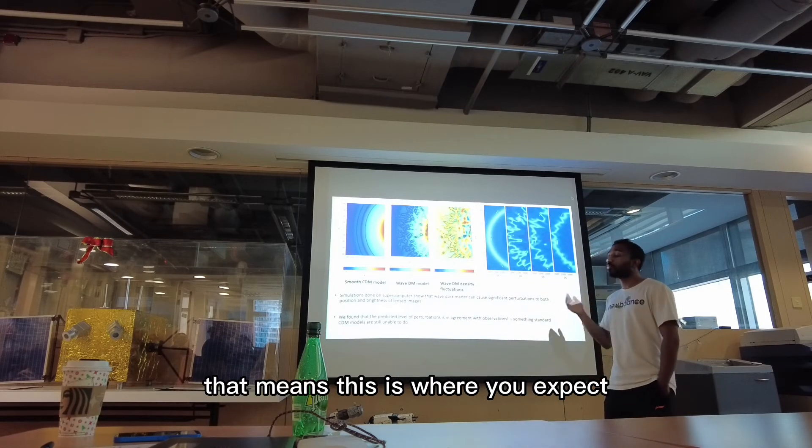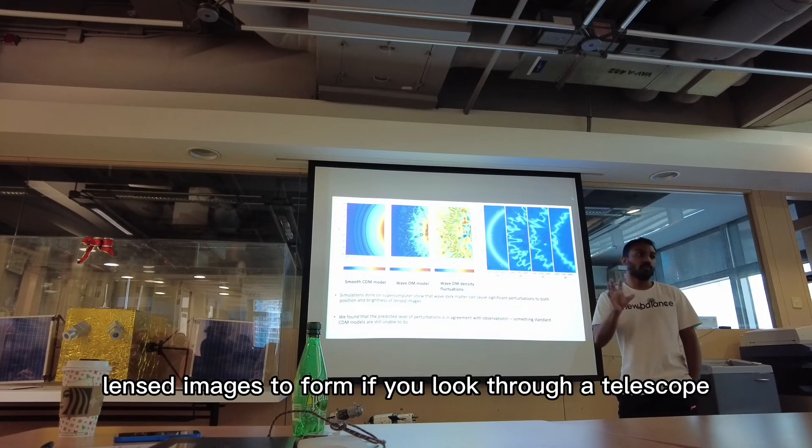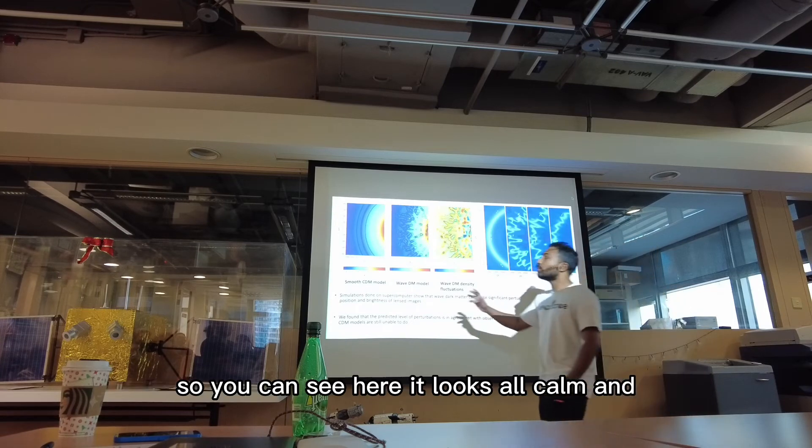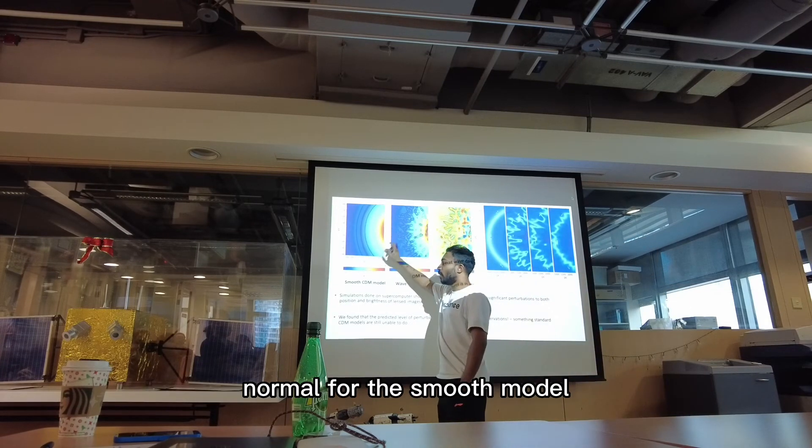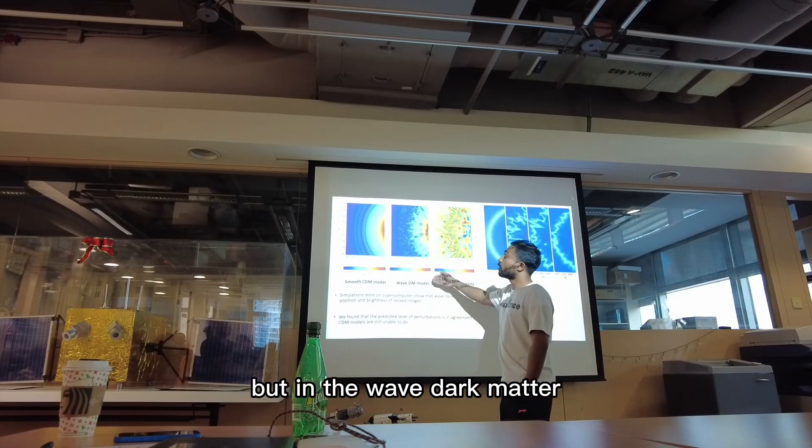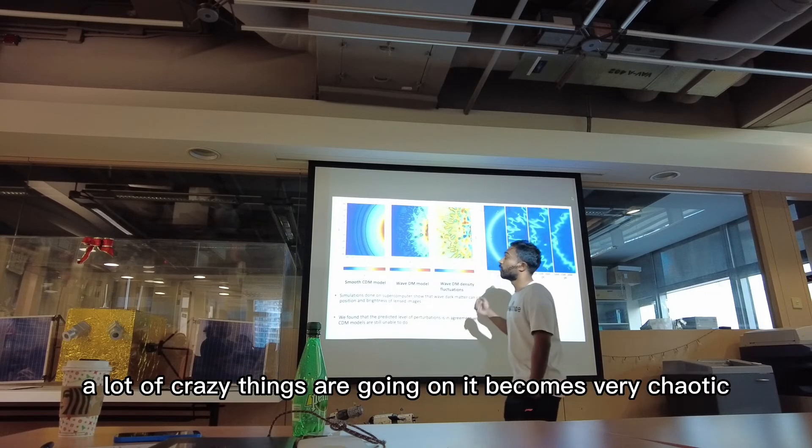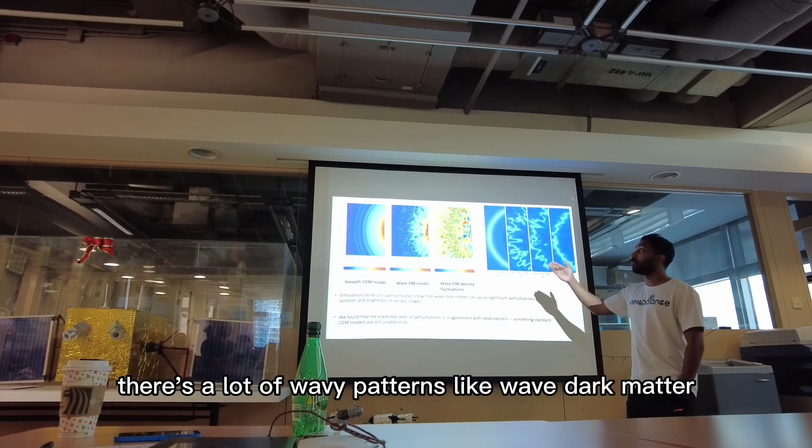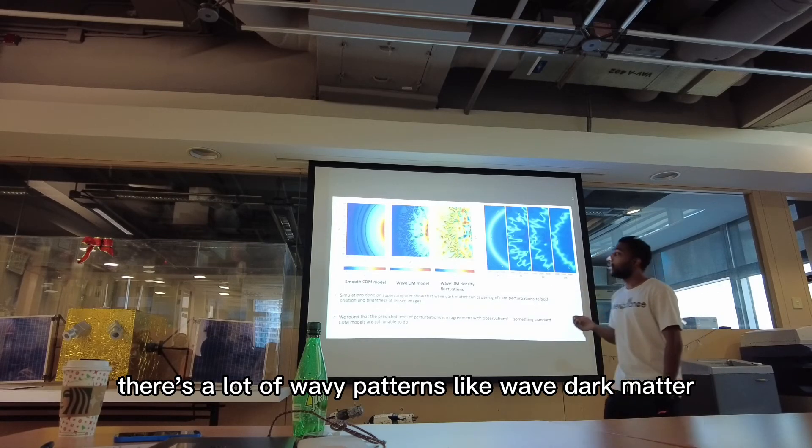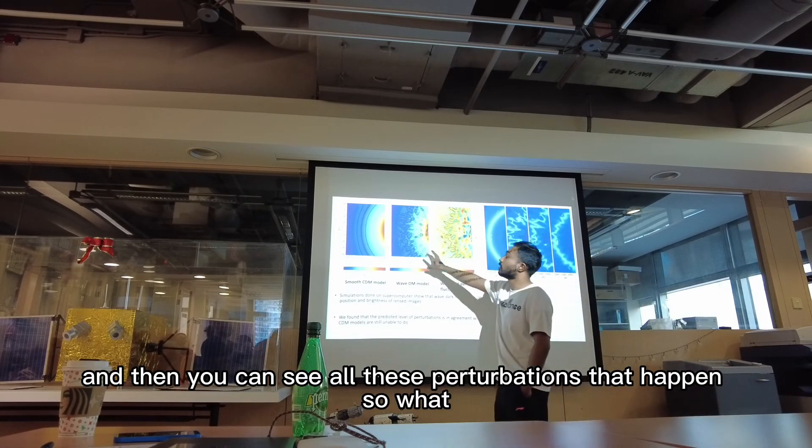That means this is where you expect lens images to form if you look through a telescope. So you can see here it looks all calm and normal for the smooth model. But in the wave dark matter a lot of crazy things are going on. It becomes very chaotic. It has a lot of grainy patterns like wave dark matter, and then you can see all these perturbations that happen.